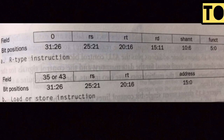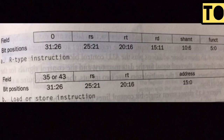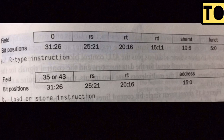For load word and store, the format is: opcode, RS, RT, and address. In R-type, RD is the destination. For load and store type, the opcode, RS, RT, and address are named accordingly. The address field uses bits 0 to 15, giving 16 bits, for a total of 32 bits from 0 to 31.